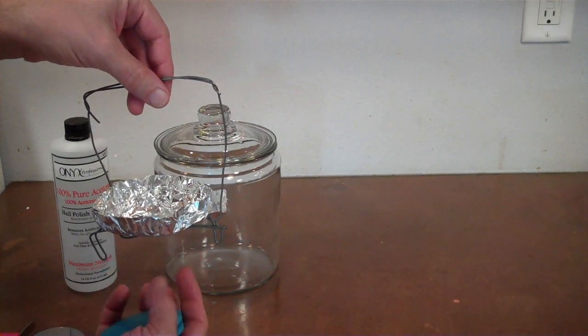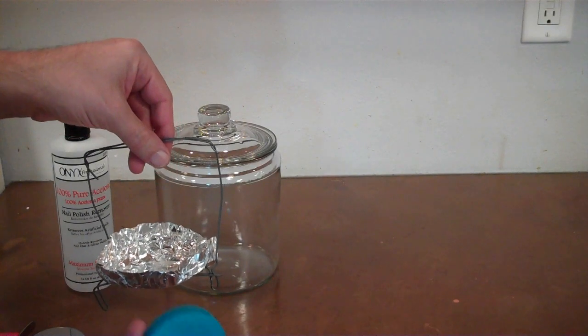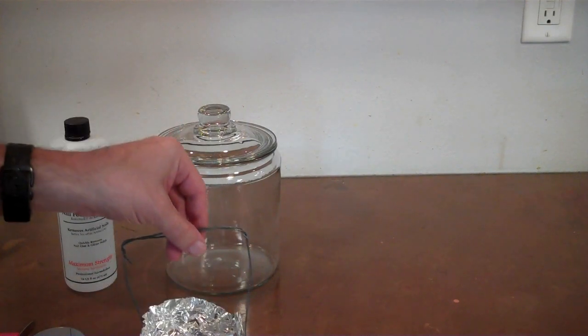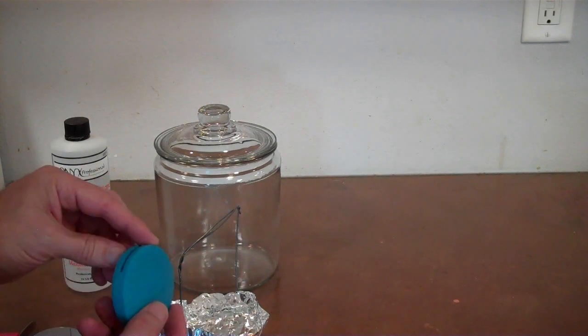I use foil here so that if the acetone bubbles at all, it does not have anything splashing the bottom of the part. You want the vapor to come around the outside and evenly coat the part.